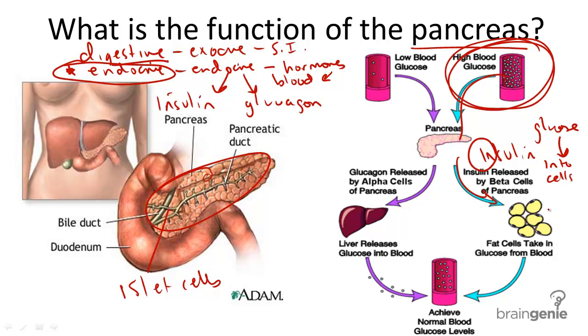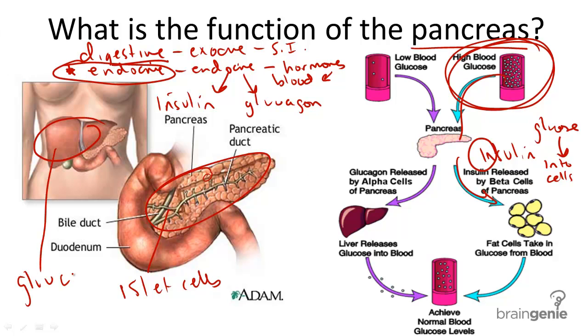Insulin also further decreases blood glucose levels by stimulating the liver to convert glucose to glycogen, its stored version.